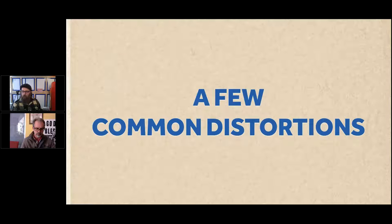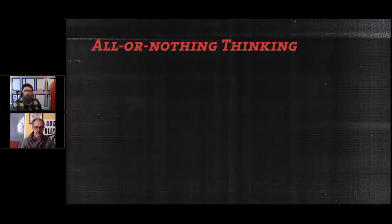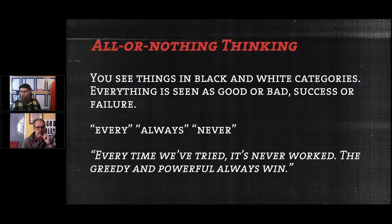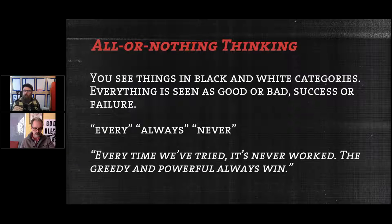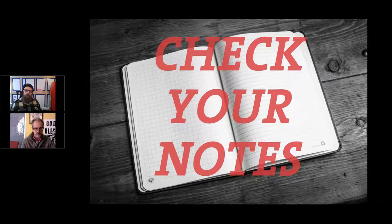The first one is called all-or-nothing thinking — thinking in terms of absolutes, black-and-white categories. Everything is seen as good or bad, success or failure. It's often characterized by words like 'every,' 'always,' and 'never.' In a political meeting, someone suggests an idea and the response is: 'Every time we try that it's never worked' or 'The greedy and powerful always win.' Thinking in these absolutes is how our thinking gets distorted. Check your notes and see if there are any examples of all-or-nothing thinking.